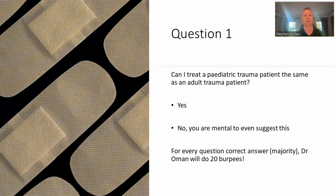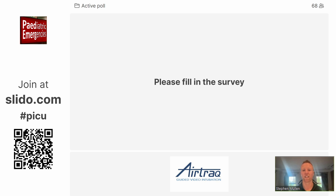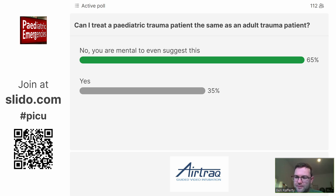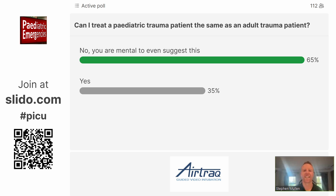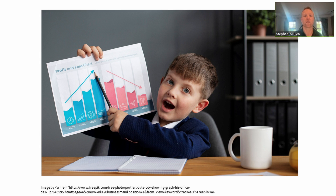The first question is: can I treat a paediatric trauma patient the same as an adult trauma patient? The answers are yes and no. We got 65% that said no and 35% said yes. A lot of the information we have from paediatric trauma actually derives from adult studies. So contrary to most other paediatric teaching, for trauma we are able to apply adult principles onto the paediatric trauma patient. Paediatric trauma is rare, as is severe trauma, so therefore we can use the adult information.